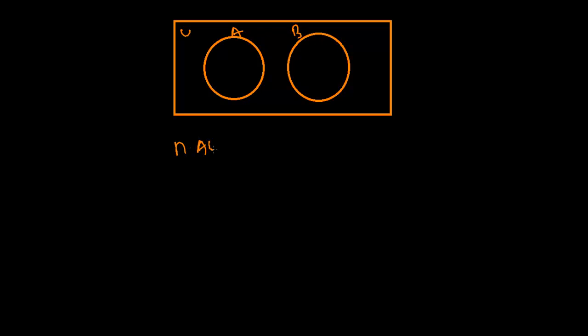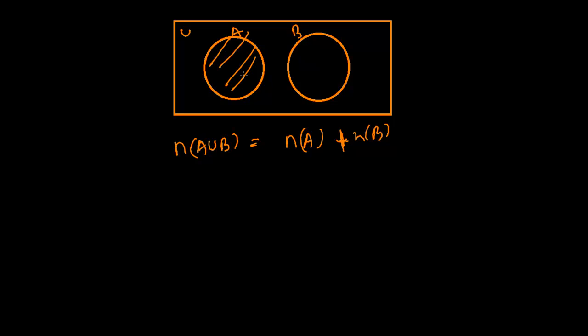If A and B are disjoint, they look something like this — A is here and B is here with no overlap. Then the cardinal number of A union B will simply be the total number in A plus the total number in B. That's it for disjoint sets, because there is no relationship at all between them — they are completely different from each other.